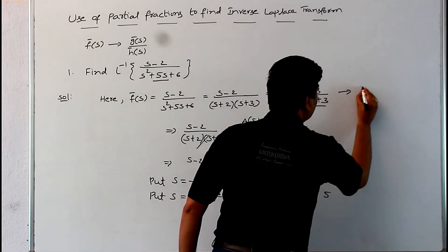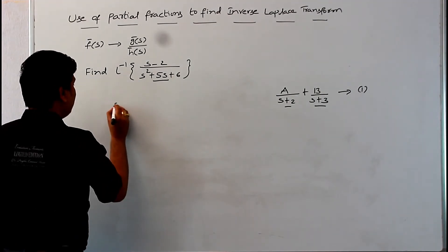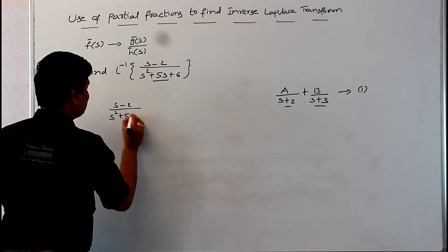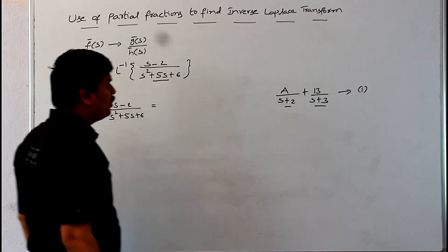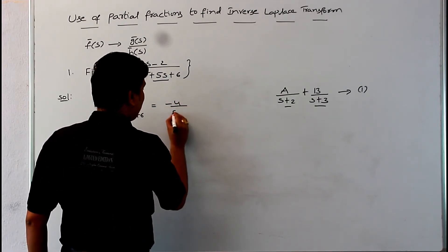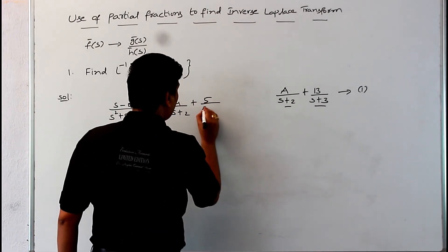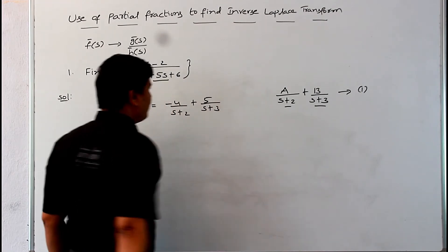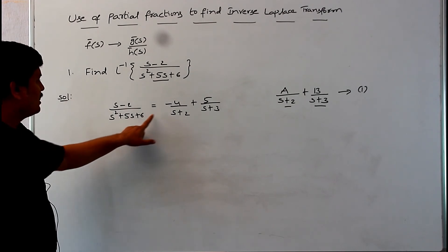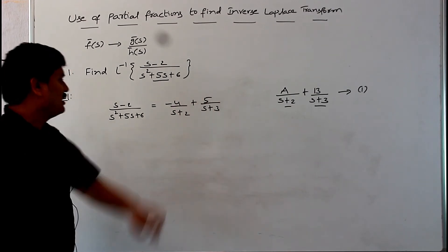Substituting these values, we get: (s minus 2) by (s squared plus 5s plus 6) equals minus 4 by (s plus 2) plus 5 by (s plus 3).